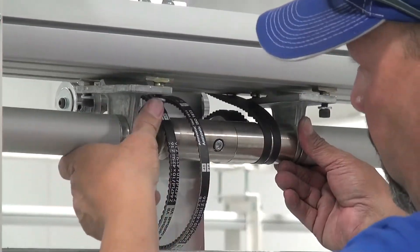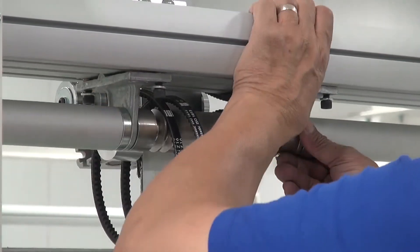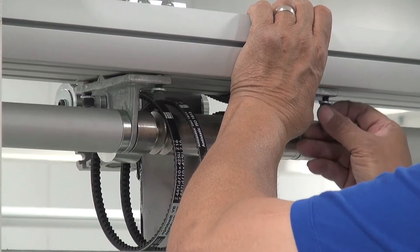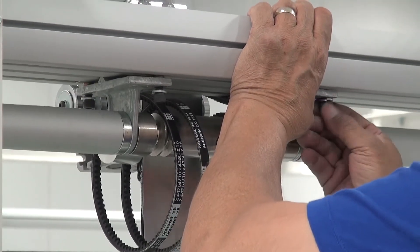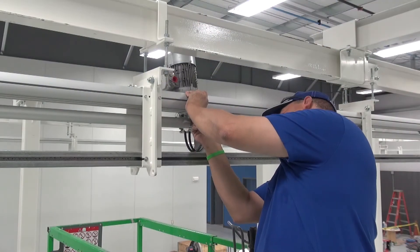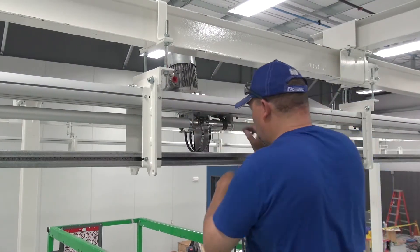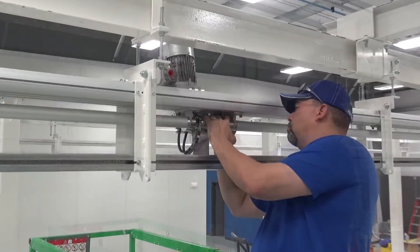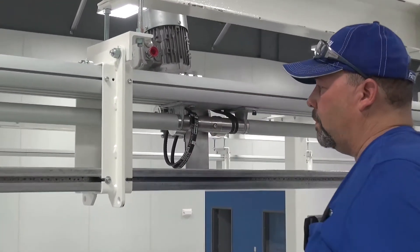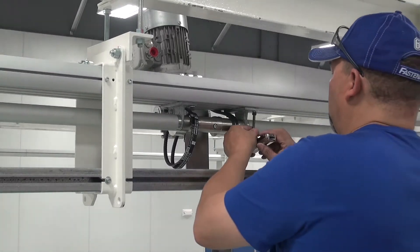Now you want to put your bearing units back in place. Again using the same technique you back the screw out slightly and then push up in and twist. And then the T-nuts catch. Then you'll tighten all of your bearing units through.